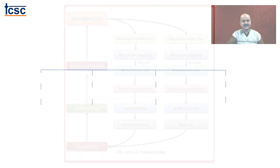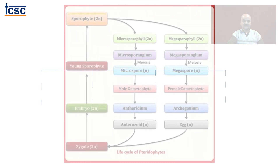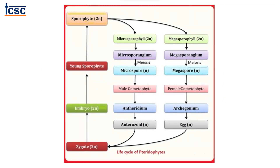Let us now understand the classification of pteridophytes, which is dependent upon various characters. Once we are aware that the plant body is a diploid sporophyte giving rise to spores, which germinate to give rise to a prothallus or gametophyte, and gametophyte gives rise to antheridia and archegonia — then we are in a position to categorize these plants according to their hierarchical levels. Modern botanists such as Smith 1955, Bold 1957, Benson 1957, Zimmerman 1959, Cronquist 1960 and Takhtajan 1964 have dropped the term tracheophyta as a taxon.